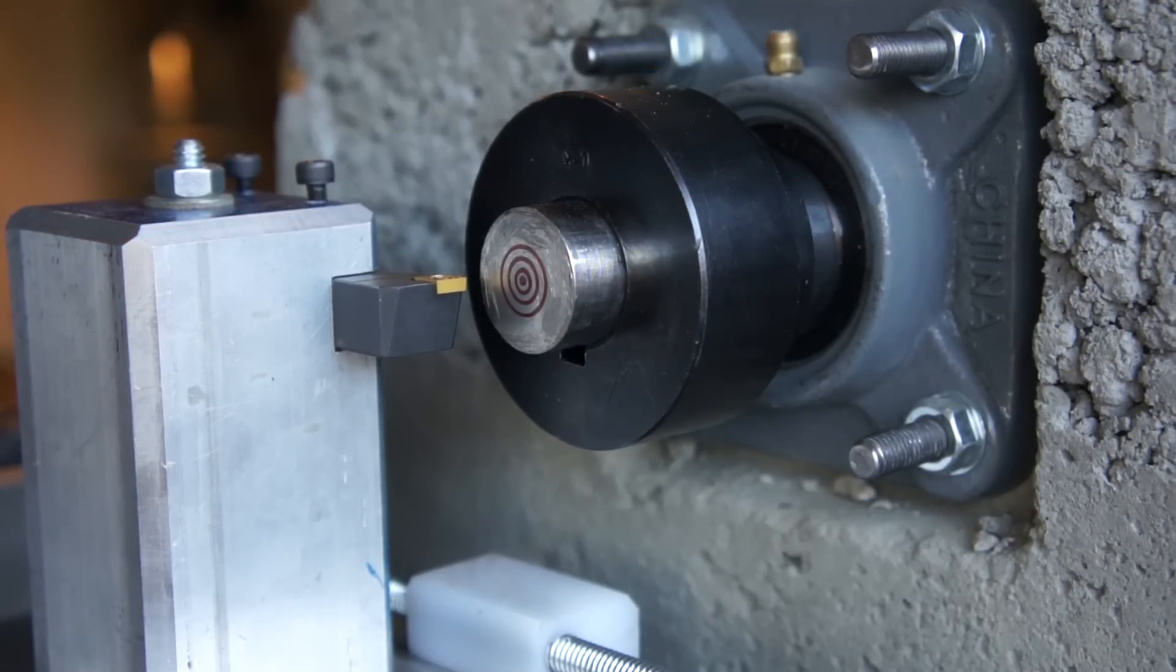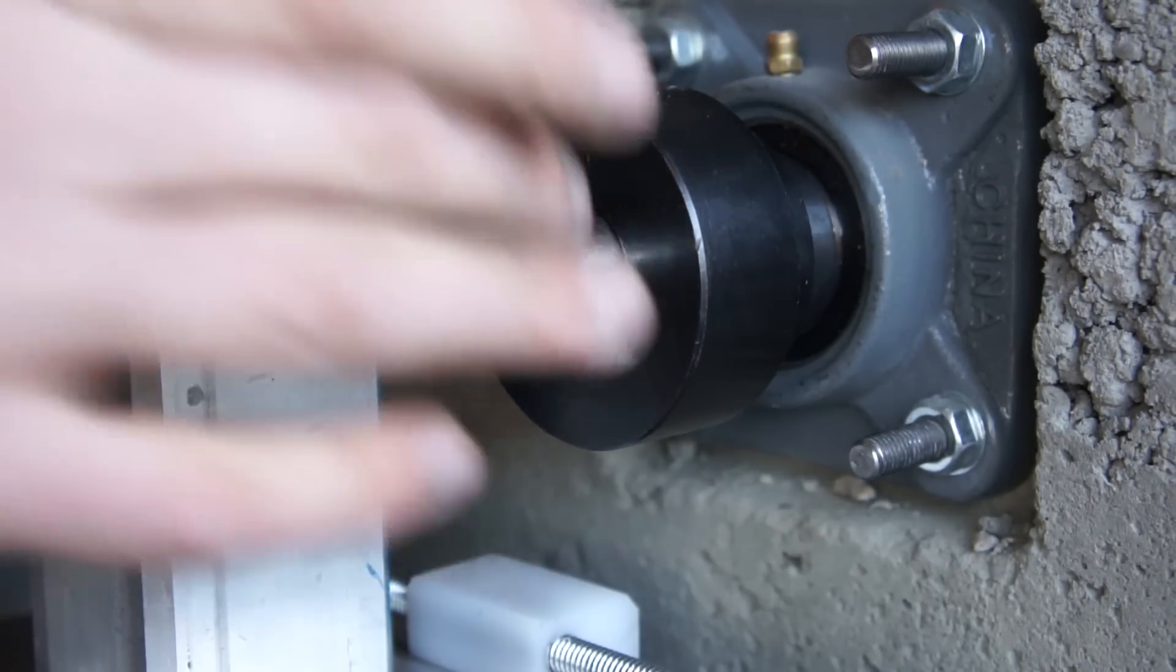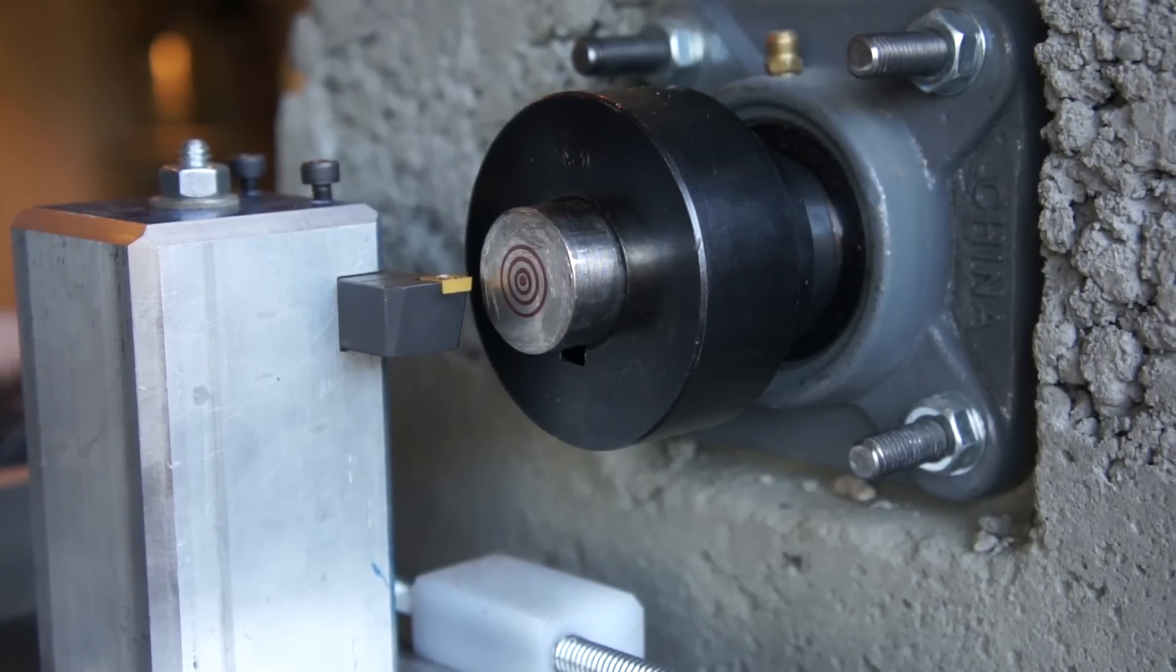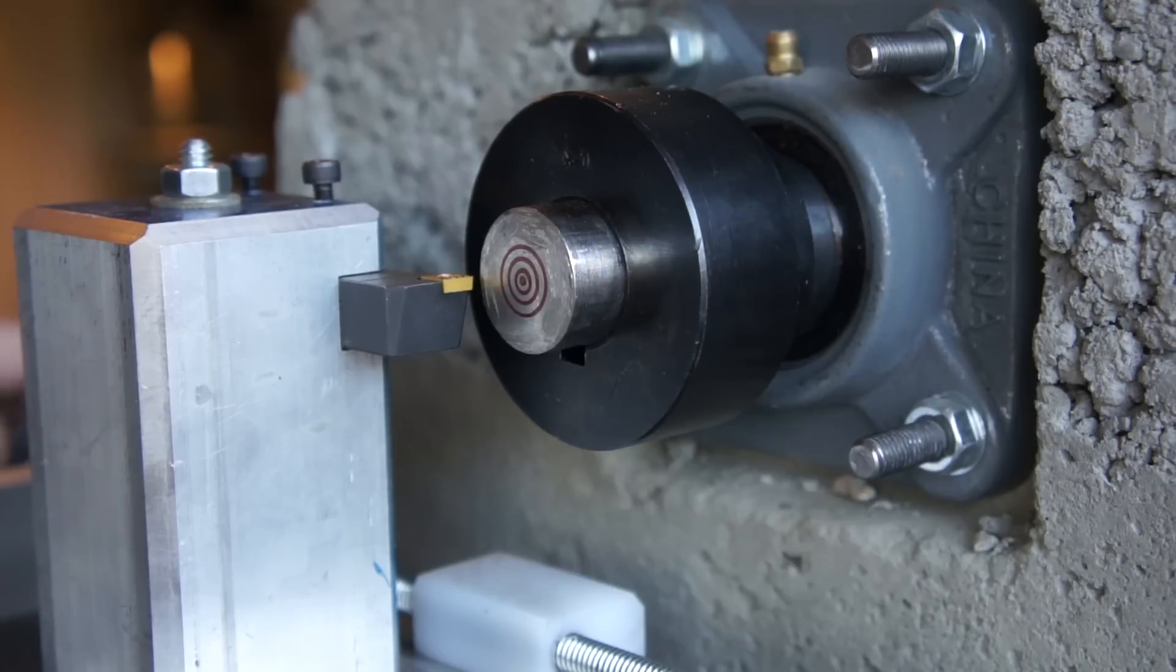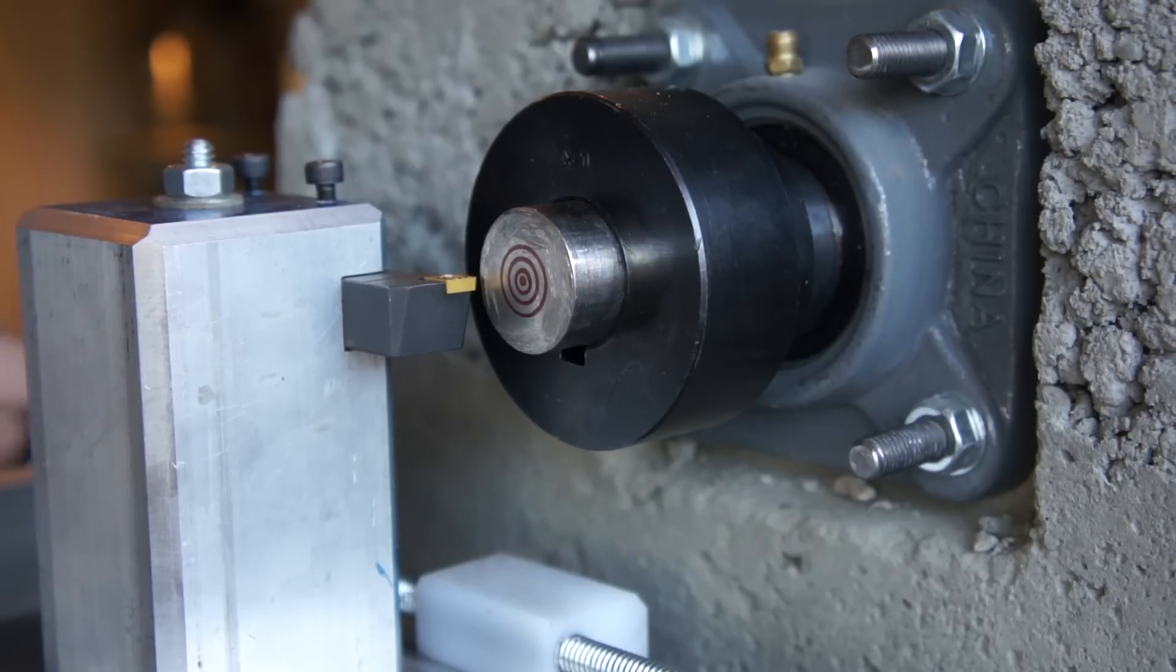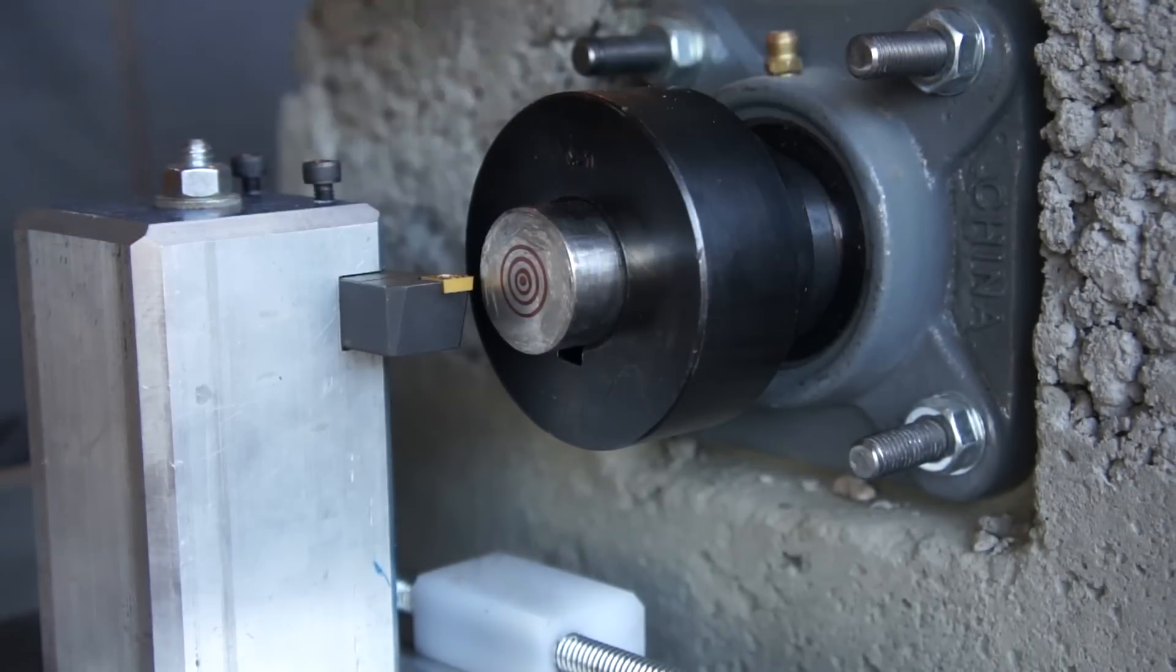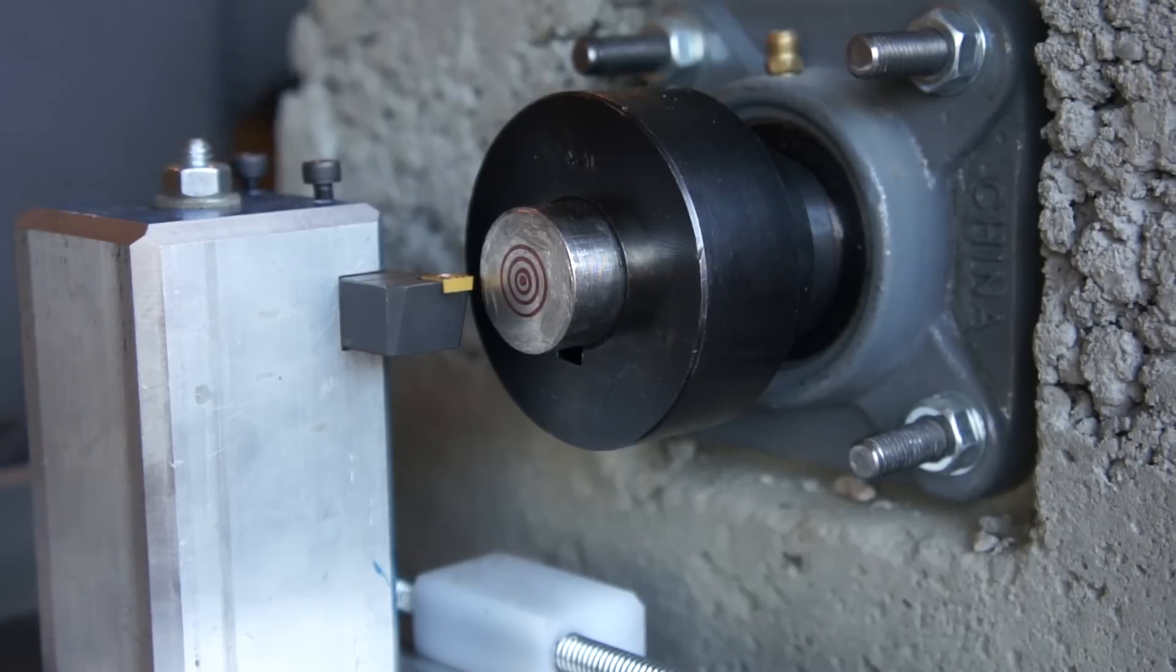I actually did have to shim it a little bit, but let's try a cut. Let's try facing this piece off. This is steel, so like the first cut this lathe is going to do is steel. I'd like to start with something softer but let's see what happens. Make sure it's tight before we get too carried away here. All right, let's go.